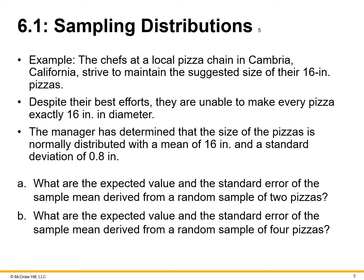Here's a sampling distributions example: the chefs at a local pizza chain in Cambria, California strive to maintain the suggested size of their 16-inch pizzas. Despite their best efforts, they are unable to make every pizza exactly 16 inches in diameter 100% of the time. The manager has determined that the size of the pizzas is normally distributed with a mean of 16 inches and a standard deviation of 0.8 inches. On average, most pizzas are 16 inches, with a deviation of 0.8 inches — so some pizzas could be 15.2 inches, some could be 16.8 inches.